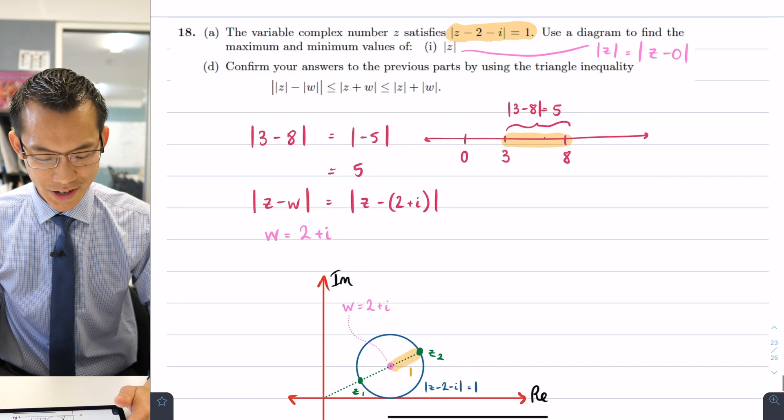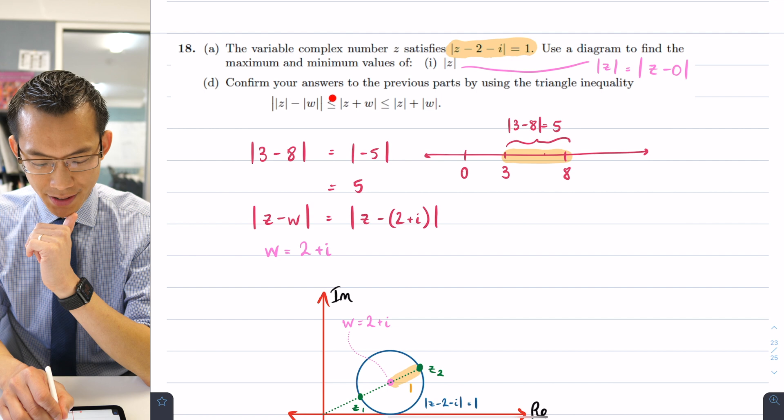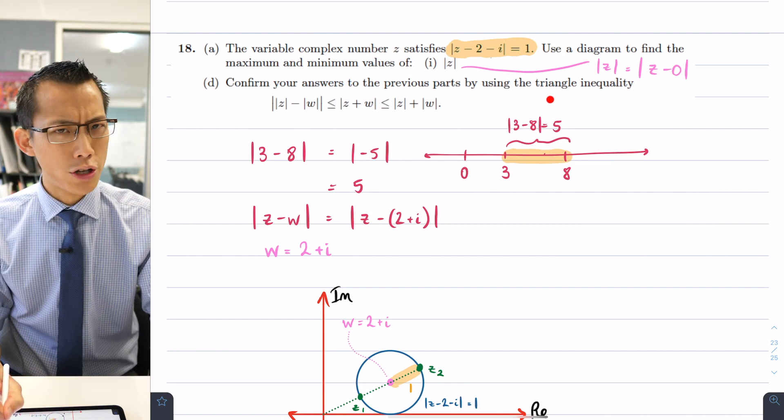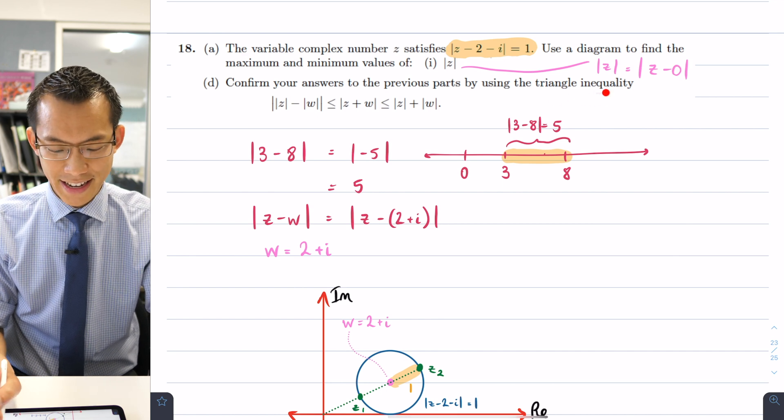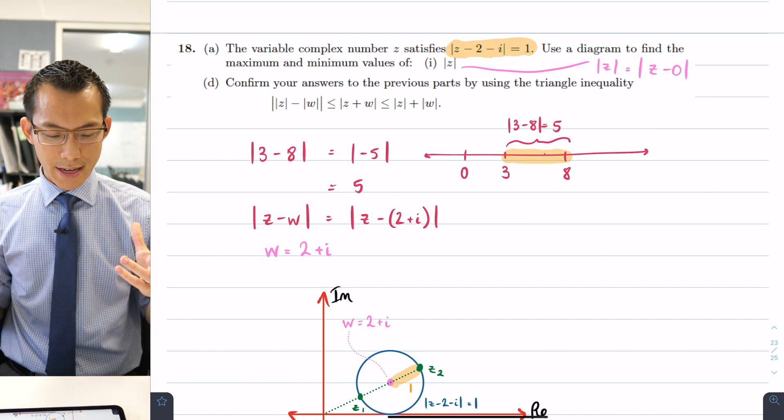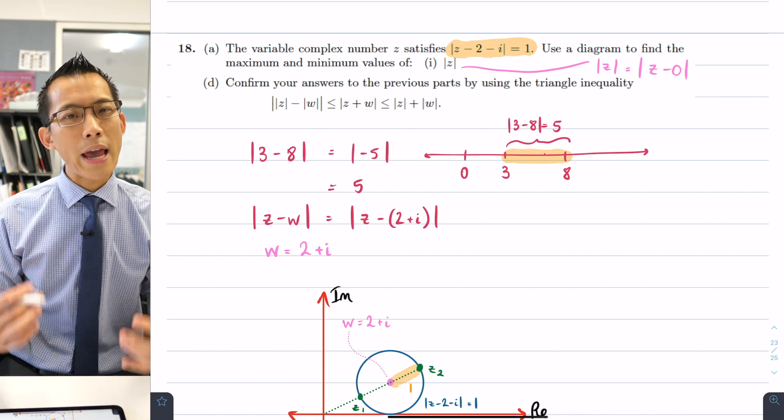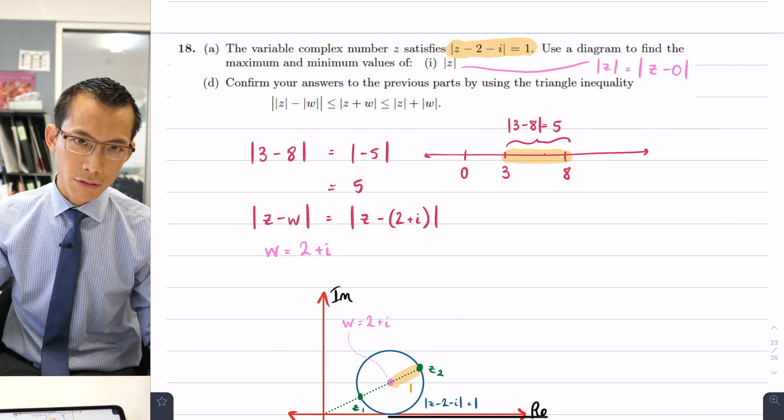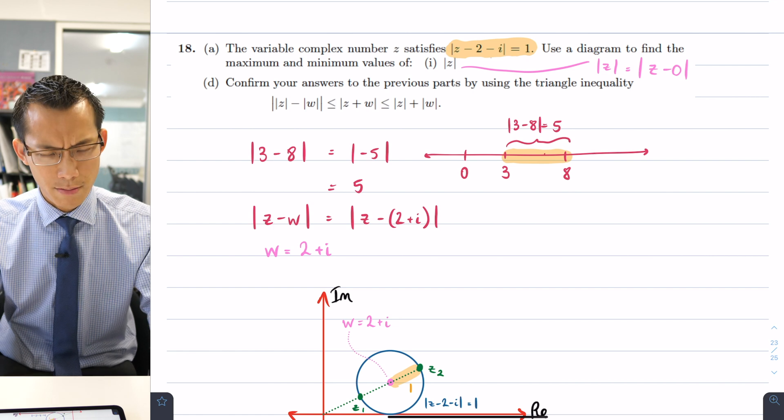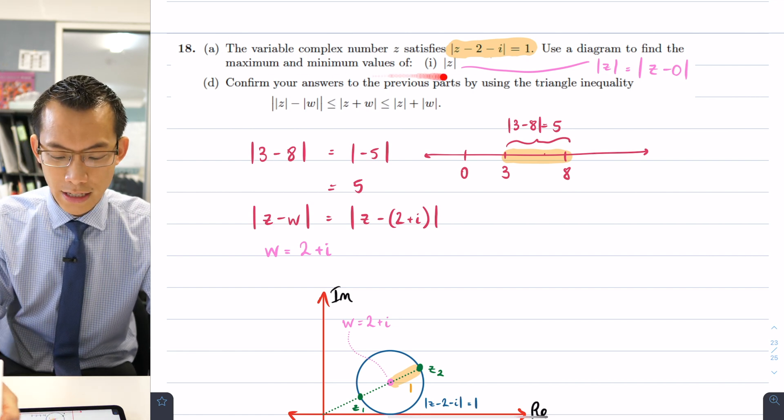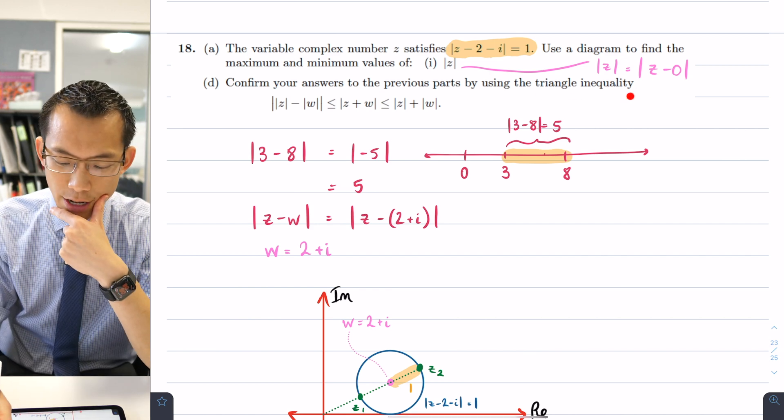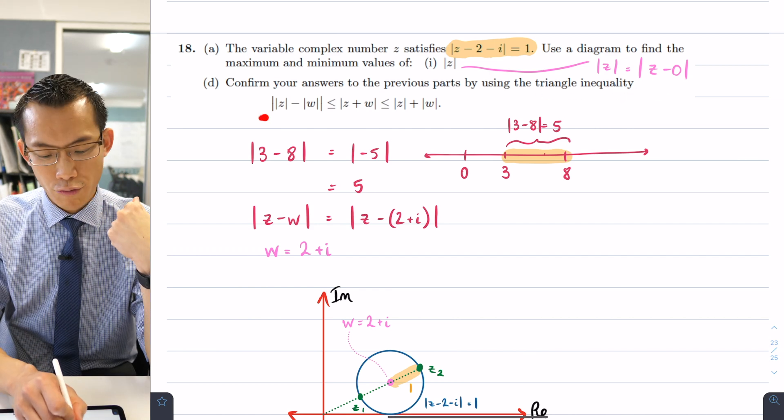What does the last part of this question ask us? Confirm your answer, the one we just found, that inequality, to the previous parts by using the triangle inequality, this guy here, and then they provide the expression for you. So, before we go any further, you can see that the whole idea here is we had to use a lot of geometric reasoning and thinking. We had to create a whole diagram and think about the modulus and what it meant. We had to do all that geometric reasoning to solve in this particular way, the one we've just completed.